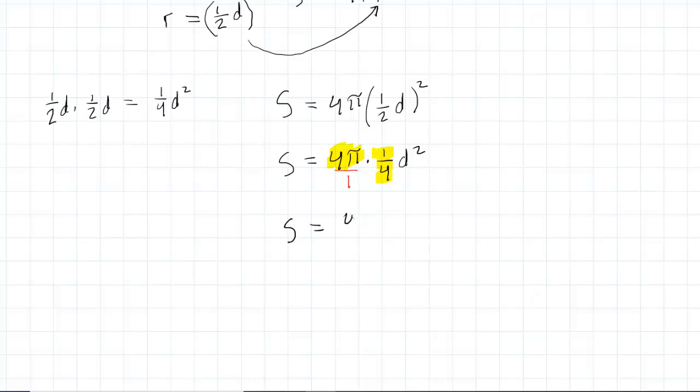So 4π times 1 is 4π, and then 1 times 4 is 4. Notice the 4s will cancel here. 4 divided by 4 is 1, so you're just going to be left with 1π. So you have πd².